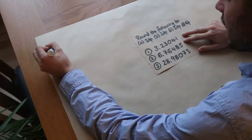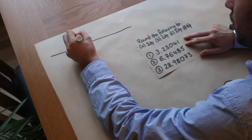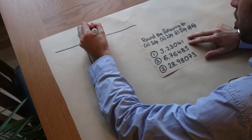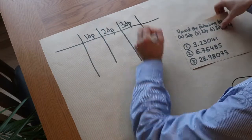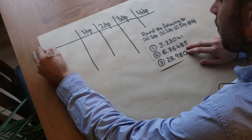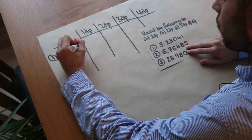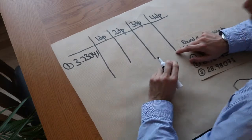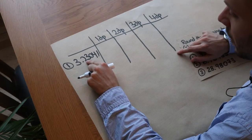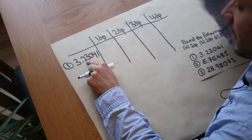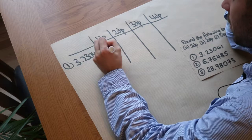Now let's do these examples on a table. We have different numbers on the left and we want to round each to one decimal place, two decimal places, three decimal places, and four decimal places. First number: 3.23041. To round to one decimal place, we look at the first digit after the decimal point. Then we check the next digit — is it greater or equal to five? No, so the two stays as it is. We've got 3.2.